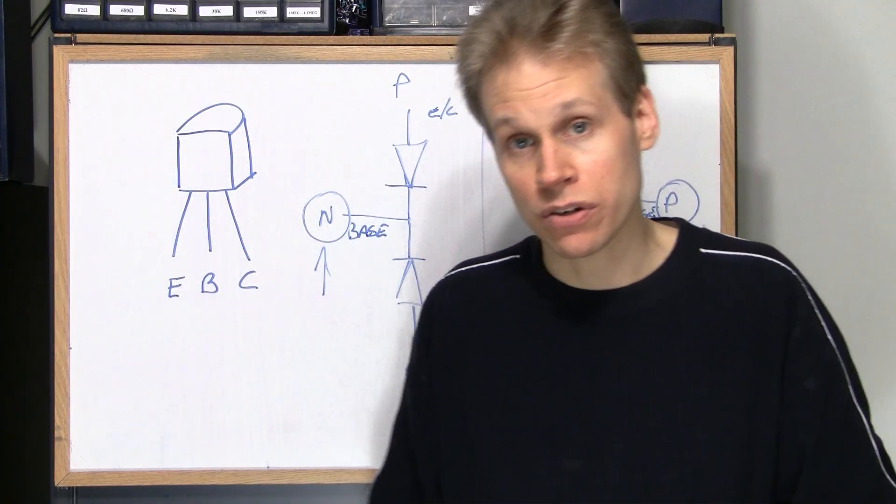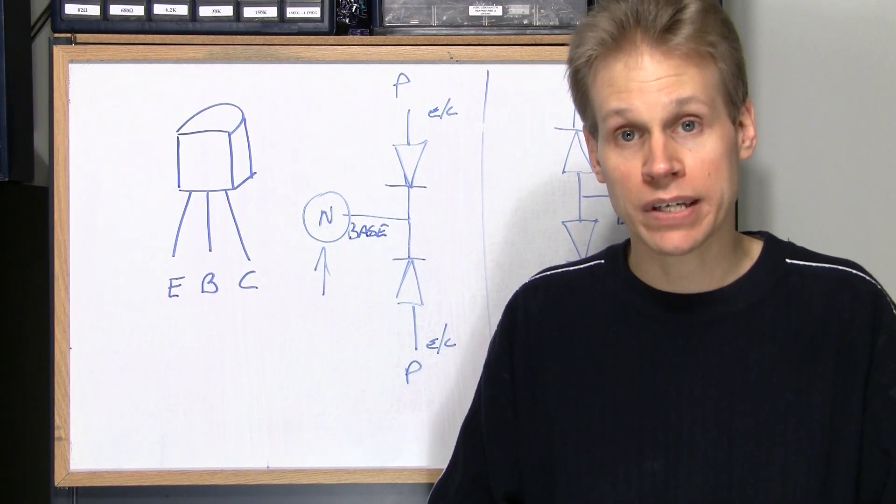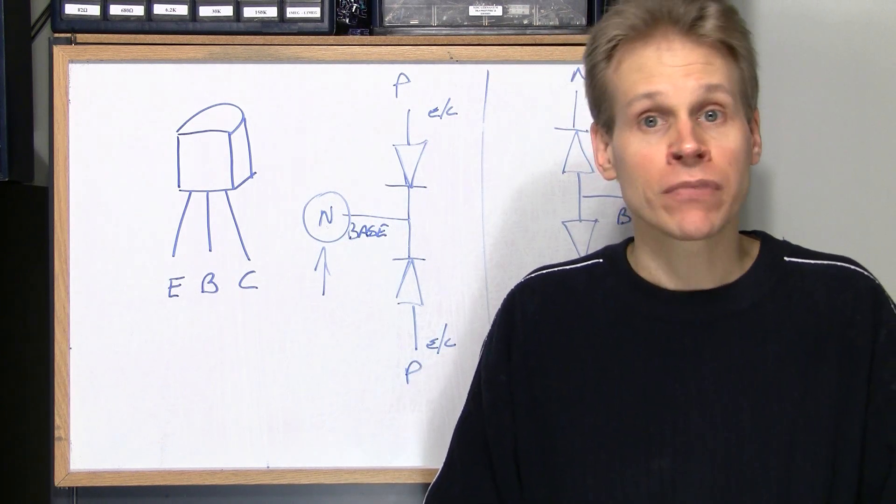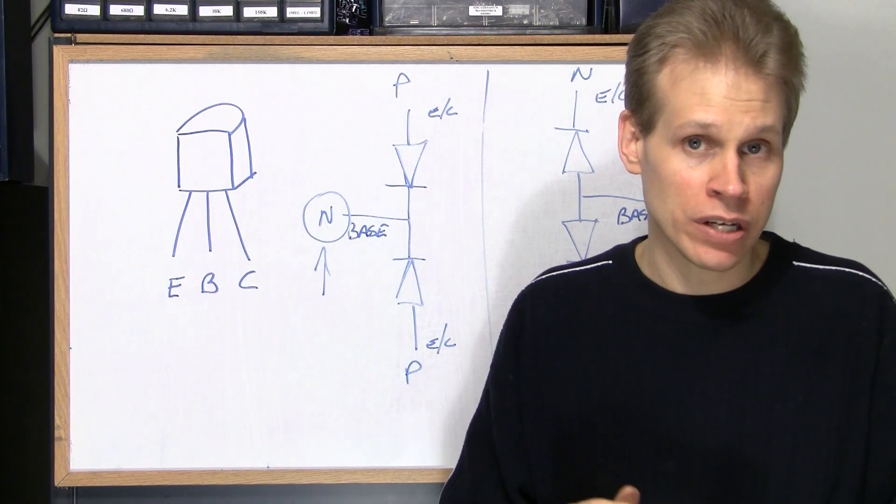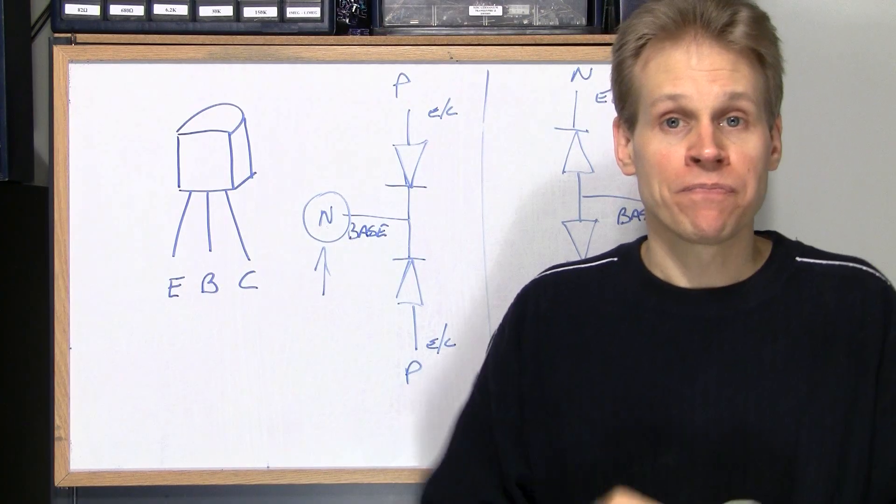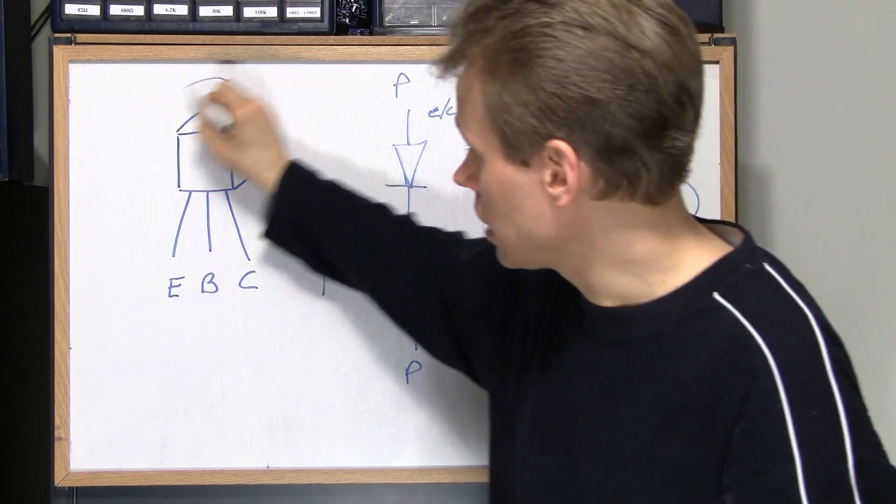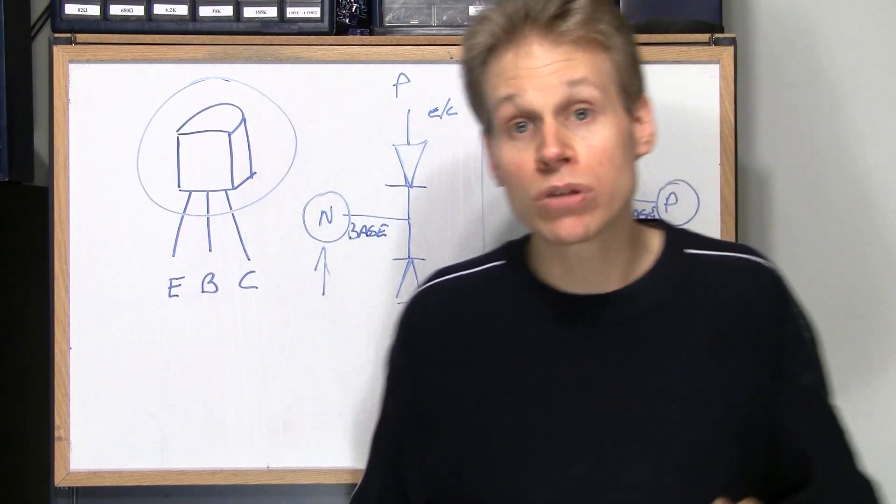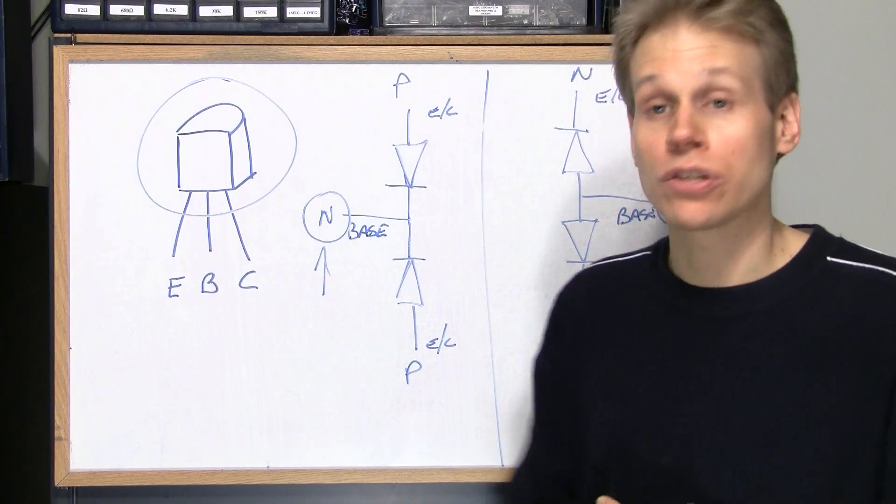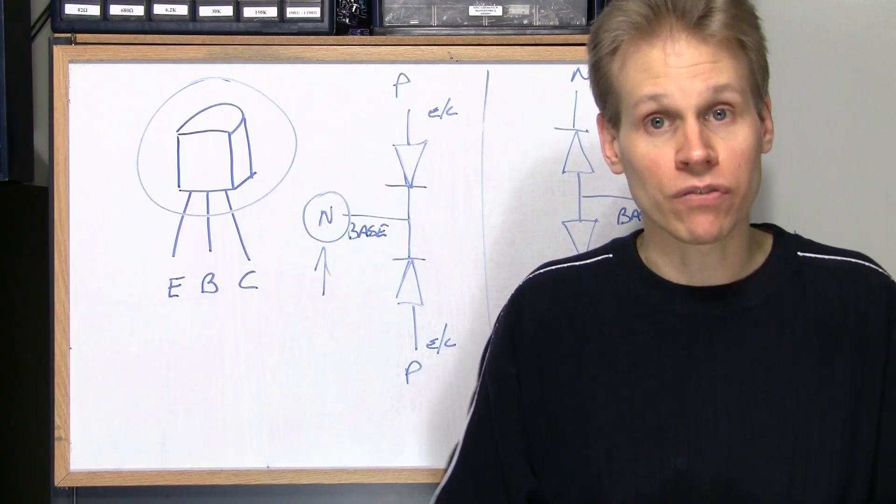Now if you want to test a germanium transistor, the forward on a germanium transistor is between 0.2 and 0.3 something usually. I've seen them as lows going down into the high ones. So depending on the germanium transistor. Germanium transistors are a completely different beast and they get greatly affected by temperature too. So this here is a standard silicon transistor and most of them are anyways. And that's basically what we're focusing on is the newer sort of transistors. If you want to test germanium transistors, you're going to be looking for lower ratings.